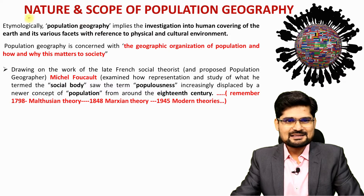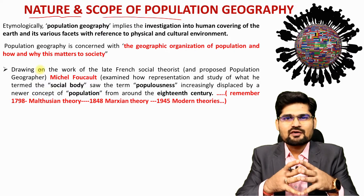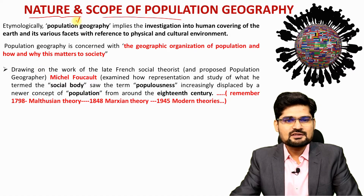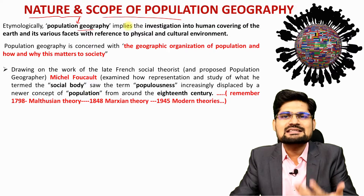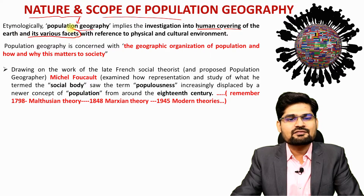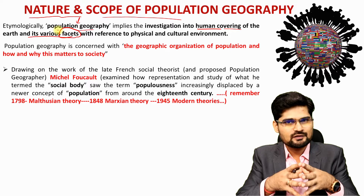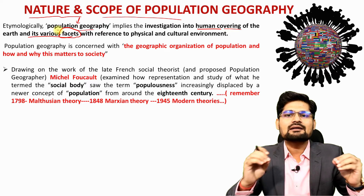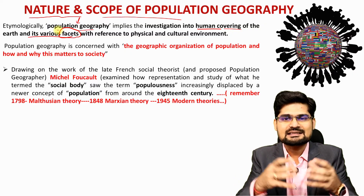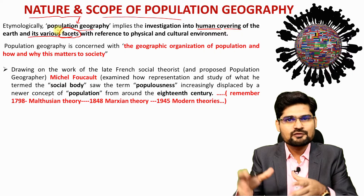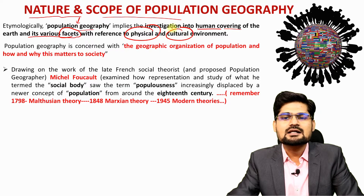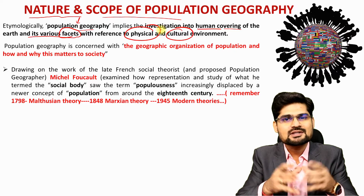So now let's discuss the nature and scope of population geography. First of all it's very important to understand what population geography is all about. Etymologically, population geography implies an investigation, an inquiry into humans and the covering of the earth and its various facets. Population is about human population — human population has different patterns in terms of their numbers, performances, different facets, their settlements, and several other topics. We observe that it is in reference to the physical as well as the cultural attributes of population that we look into when we say population geography.